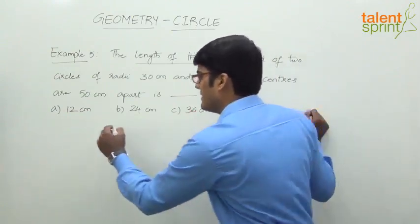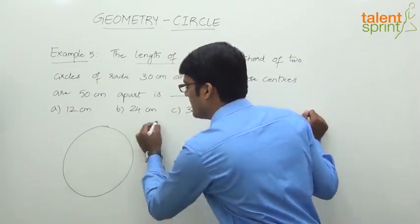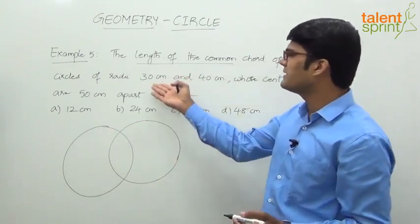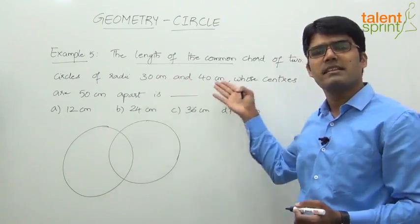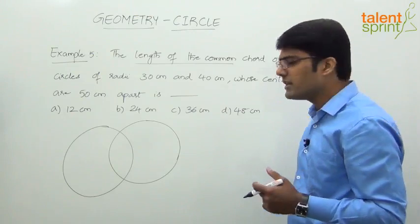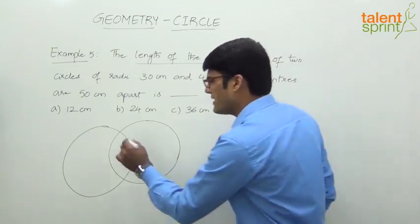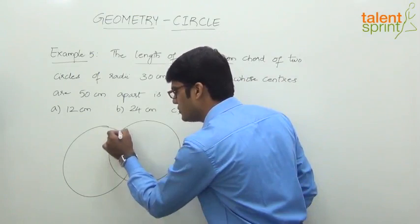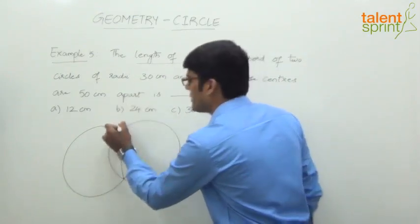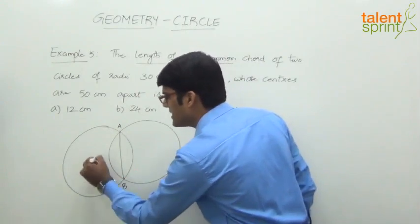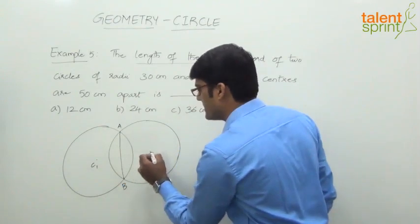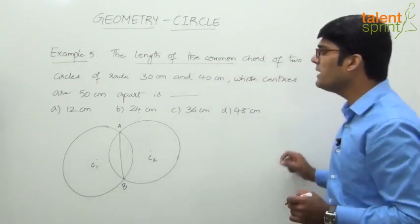We have already discussed the common chord concept. When two circles intersect — let's say circle one and circle two — they need not be the same size. Here one is 30 centimeter radius and the other is 40 centimeter radius. The two circles intersect at two points, and the line joining those points is the common chord. Let's say AB is the common chord, with center C1 for the first circle and C2 for the second.